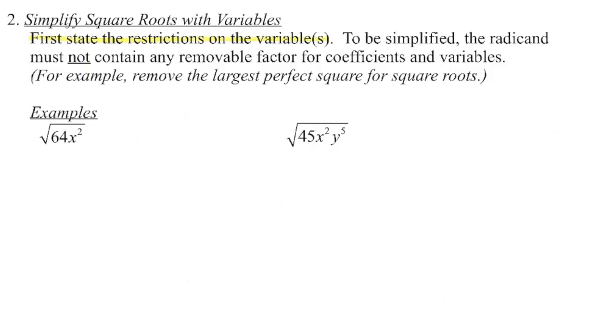When we simplify a radical that contains a variable in the radicand, the first thing we're going to do is state any restrictions on the variables before we simplify.